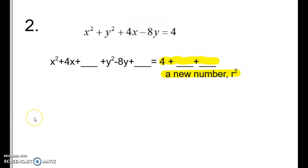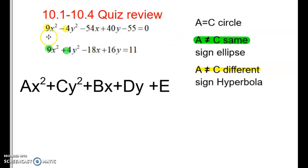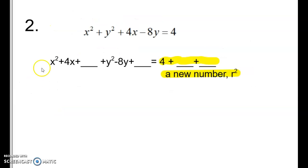Okay, problem number two. I can see this is a circle. One and one, just like we were talking previously. If they're the same, that's a circle.